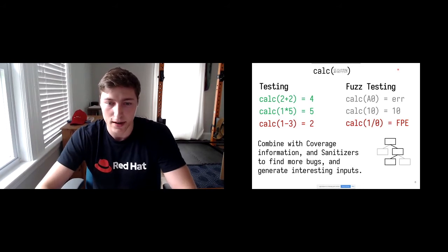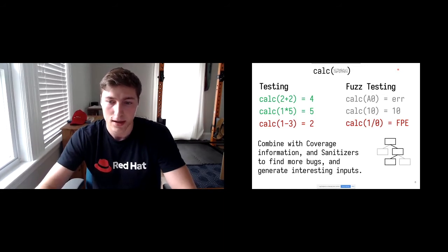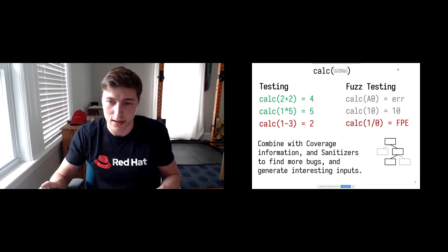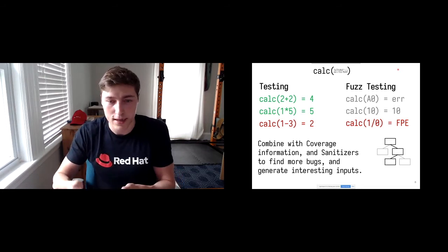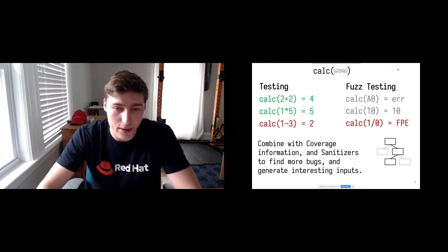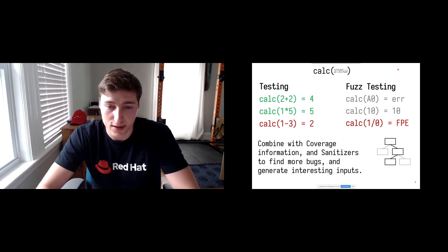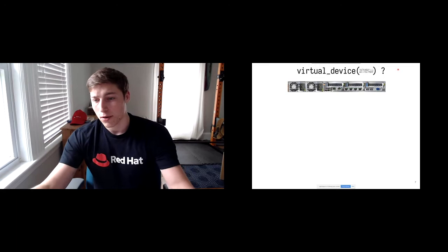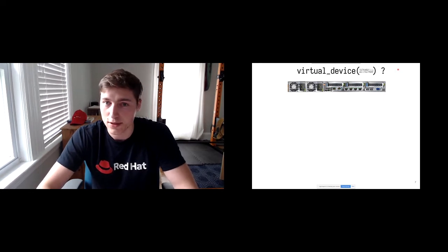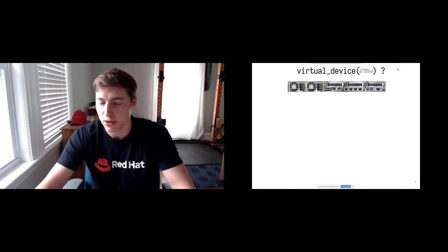Fuzzing has been combined with coverage information, where you track the coverage that each fuzzer-generated input achieves over your application. Based on that, you can judge whether an input produced interesting behavior. If it was interesting, you store it and use it as the basis for further mutations. You can also build your program with sanitizers to find classes of bugs that are typically hidden. Fuzz testing has proven very powerful across domains from image parsing libraries to the kernel. So we just need to find the virtual devices and provide them with fuzzer inputs.